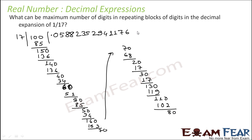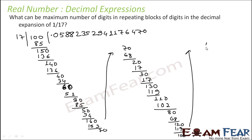Continuing: 80 — 17 into 4 is 68, leaving 12. Then 120 — 17 into 7 is 119, leaving 1. Then 10 — can't divide, put 0, becomes 100. 17 into 5 is 85, leaving 15, giving 50. We see things are repeating now. It repeats from 150 onwards, and once we get 1 again, the pattern repeats. So we get 0, then 5, and the sequence starts again.